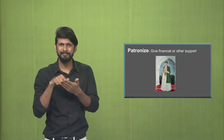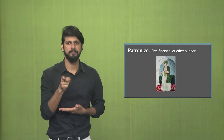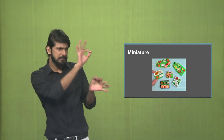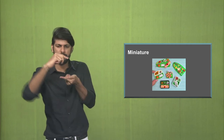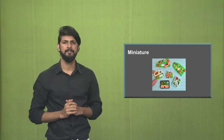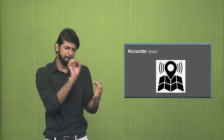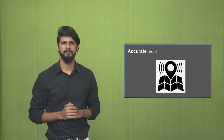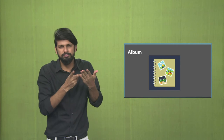Let's focus on the new words. Patronize: to give financial support or other kind of support, which normally came from royal and noble people. Miniature: an accurate version of a real life object depicted in a very small format. Accurate means exact — for example, portraits are very accurate. Album: something we use to put pictures.